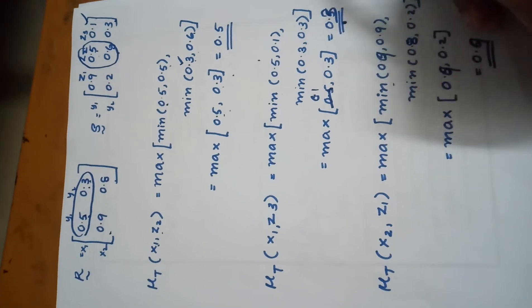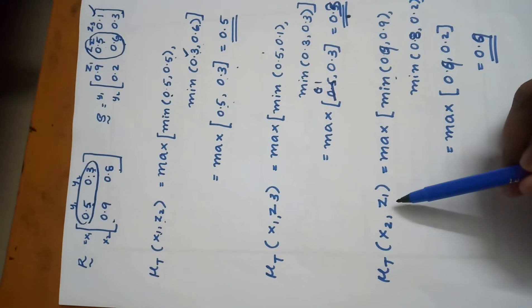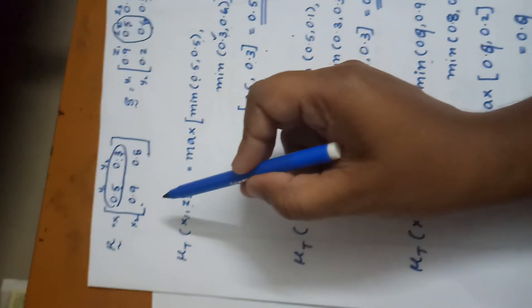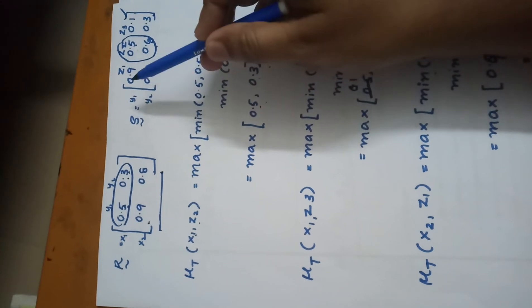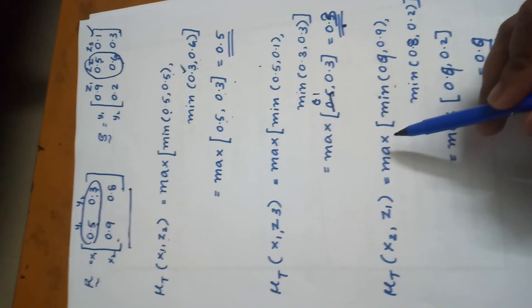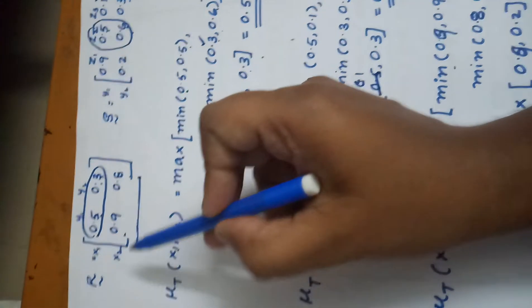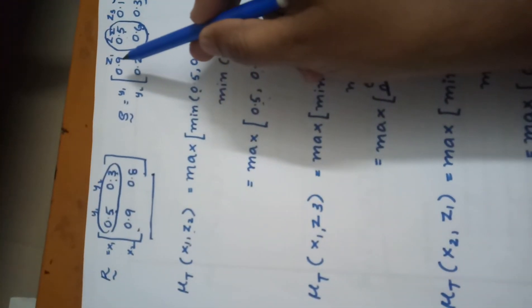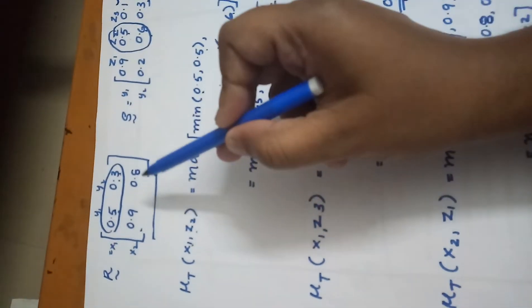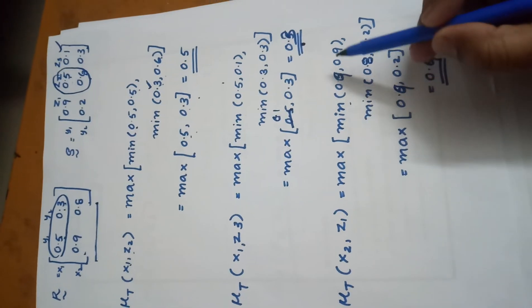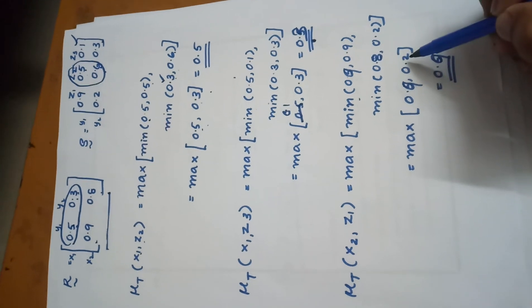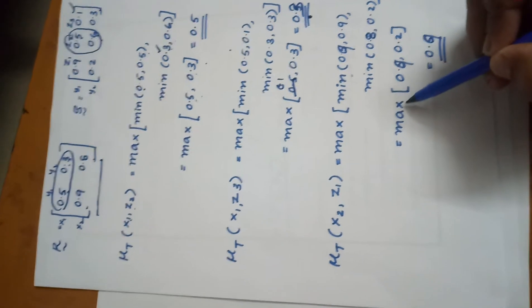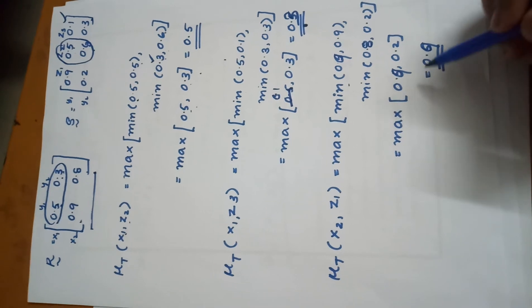Next, we calculate for second row elements: μT(x2, z1). This is the second row element and z1 is the first column element. That equals max of [min(0.9, 0.9), min(0.8, 0.2)]. Minimum of 0.9 and 0.9 is 0.9, minimum of 0.8 and 0.2 is 0.2. Then max of 0.9 and 0.2 equals 0.9.